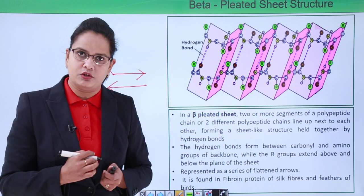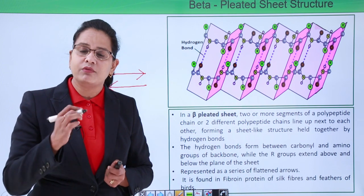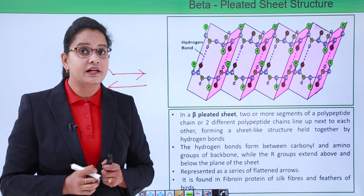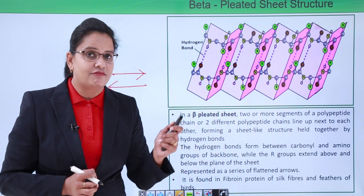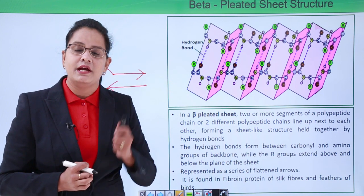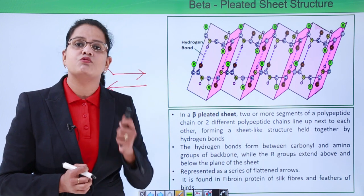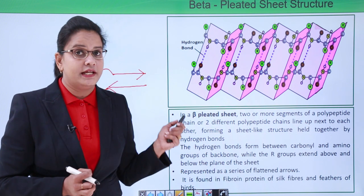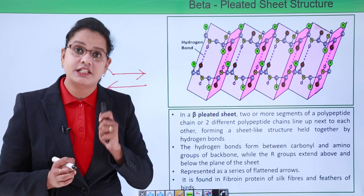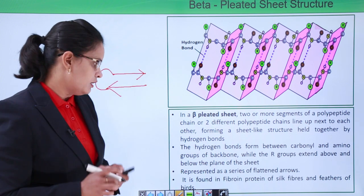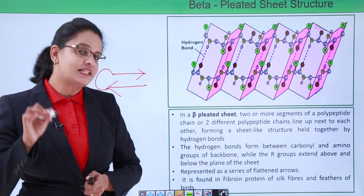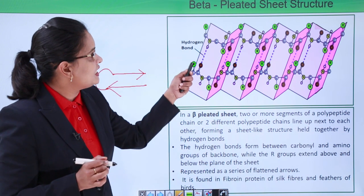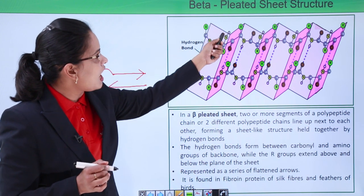We can see the clear difference between alpha helix and beta pleated structure: in alpha helix the hydrogen bonding was intramolecular, whereas in beta pleated sheet it is intermolecular. The beta structure also has R groups — in beta pleated structure the R groups are above and below the plane.